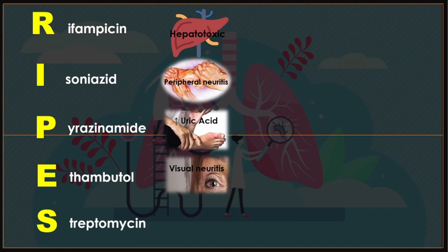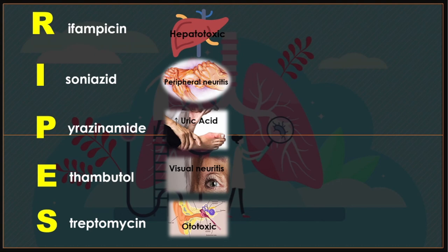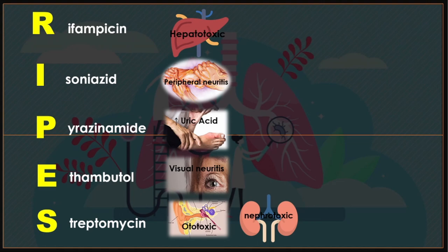S — streptomycin. This is one of the most effective antibacterial agents known for tuberculosis and has a marked bacteriostatic action on the tubercle bacillus. Important to remember: streptomycin is ototoxic, so you need to monitor the patient's hearing, as hearing loss is an indicative adverse effect. It is also nephrotoxic, so monitor urine output and other signs of nephrotoxicity.